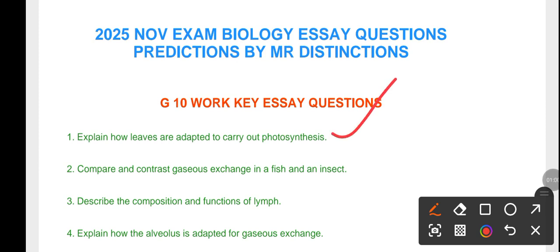So number one, as you can see, you need to know this essay question: Explain how leaves are adapted to carry out photosynthesis. This question mostly carries eight marks. So I want you to understand and fully know this question. And sometimes you'd find that it carries the entire 12 marks.